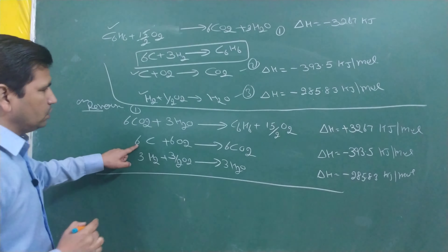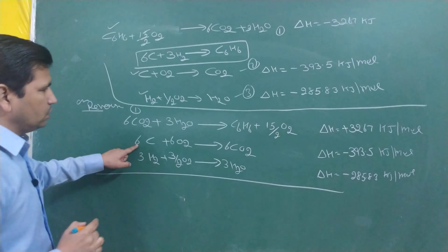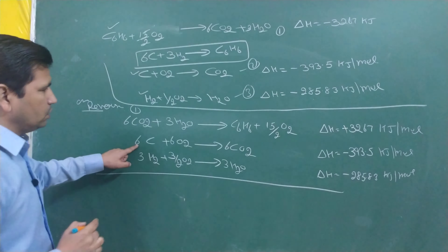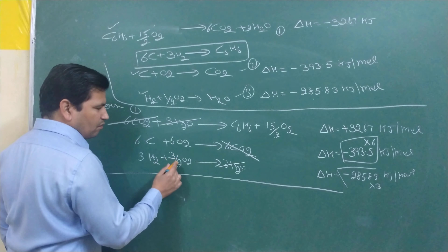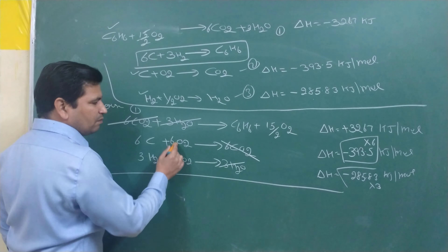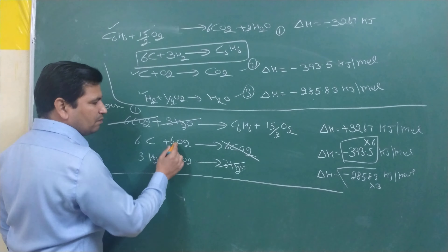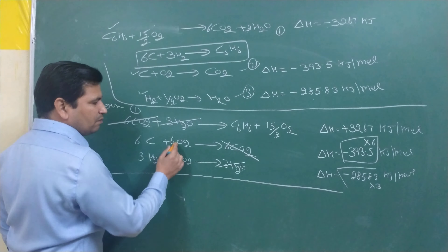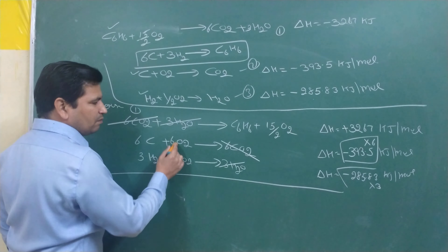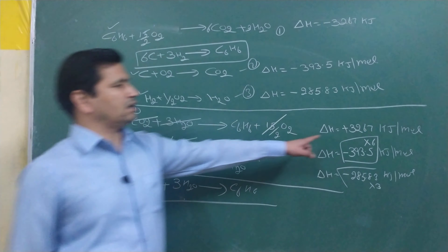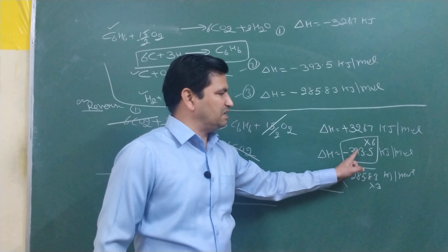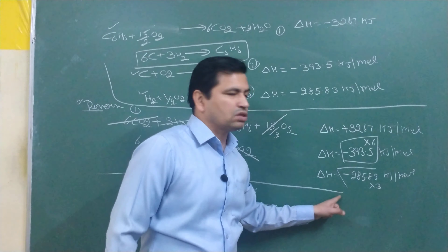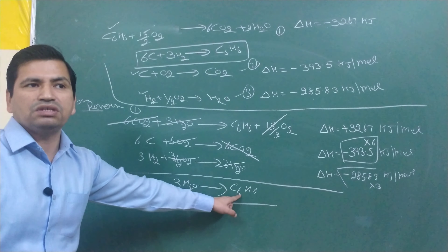Now cancel out common species. The 6CO₂ on the product side of Reaction 2 cancels with 6CO₂ on the reactant side of reversed Reaction 1. The 3H₂O cancels similarly. The O₂ terms: 6 plus 1.5 = 7.5 = 15/2, which cancels with 15/2 O₂ on the product side. What remains is 6C plus 3H₂ → C₆H₆, giving us the enthalpy of formation of benzene. Sum up all the enthalpy values to get the answer.